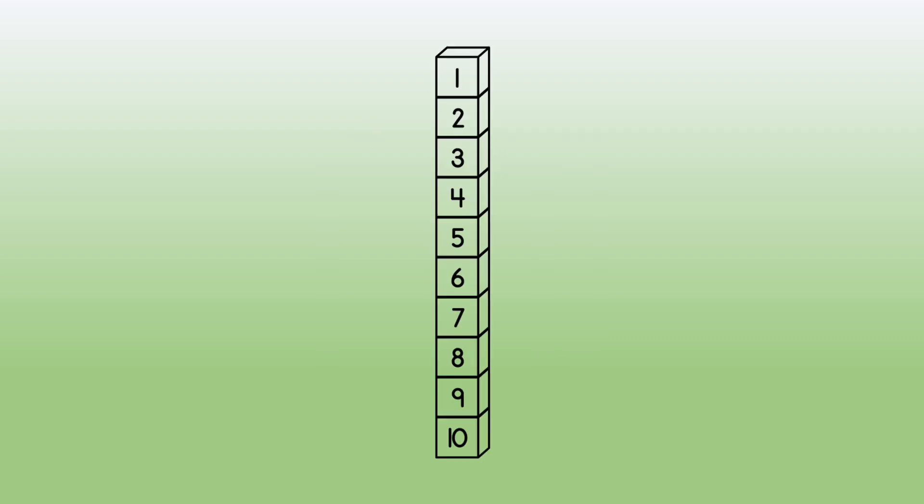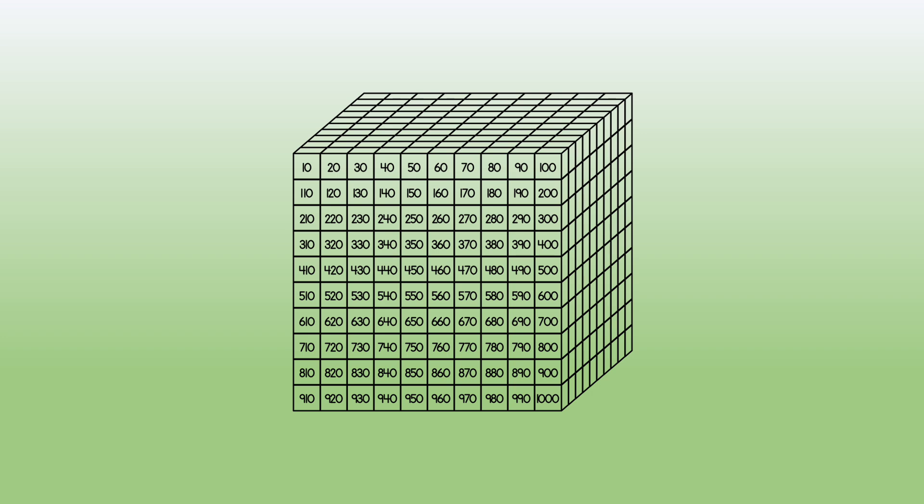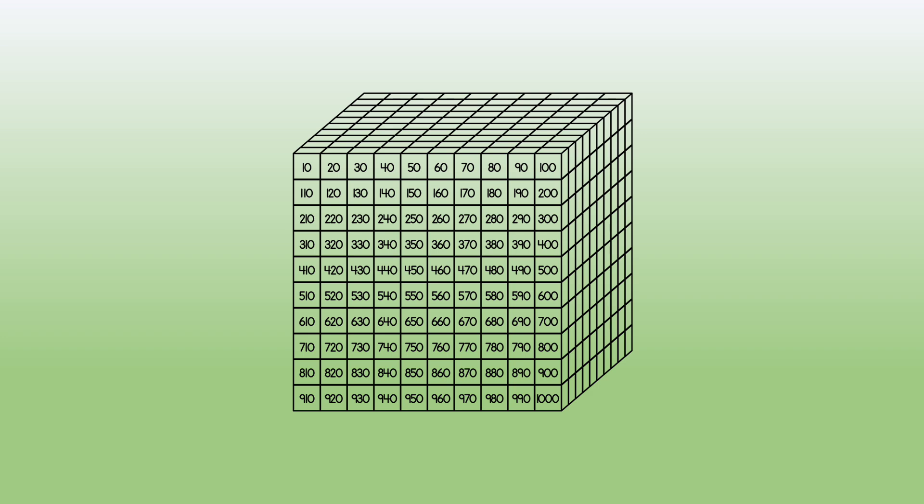The littlest ones are called bits. These are called rods or longs. These are called flats. And this one is a cube. Each shape stands for a certain number.